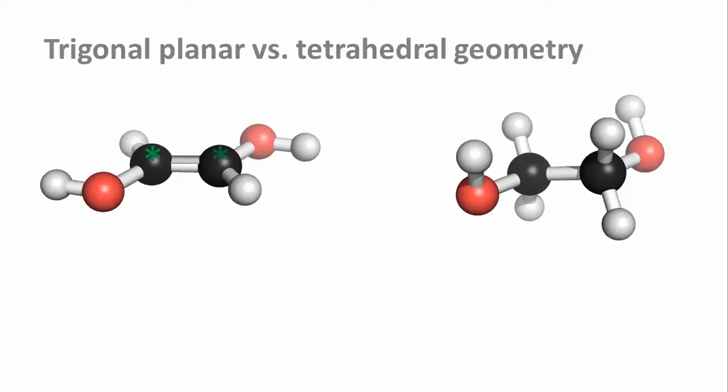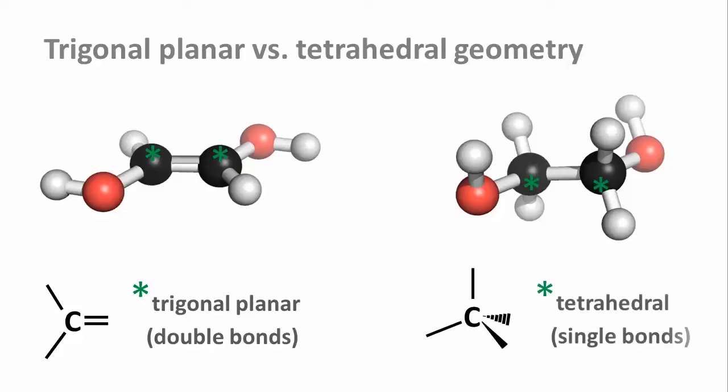Carbon atoms with one double bond always have this trigonal planar geometry. In contrast, carbon atoms with four single bonds always have a tetrahedral geometry.